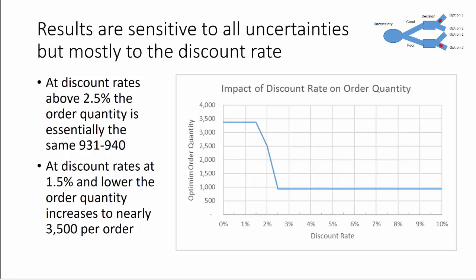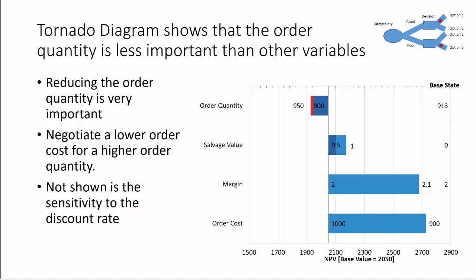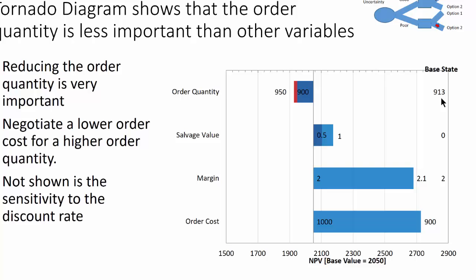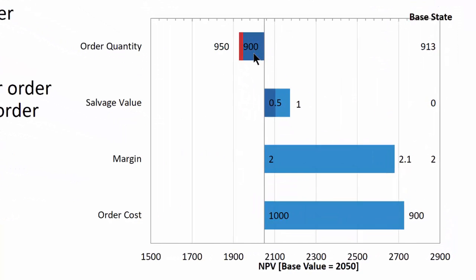To look at the sensitivity of our model, we can also look at this tornado diagram. Now a lot of tornado diagrams are done deterministically. This is a probabilistic or an EV tornado diagram. So this really represents the expected value NPV, given that I hold one variable constant and all the others remain uncertain. So the demand is always going to be uncertain in our case. So here's our reference case of 2050 at a 931 base. And if I reduce the order quantity to 900, you can see my NPV goes down. If I increase it to 950, it also goes down. In fact, it goes down more at 950 than at 900.